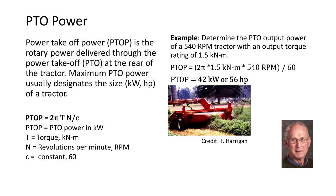Power takeoff power is the rotary power delivered through the power takeoff at the tractor's rear. Tractor size in kilowatts or horsepower is usually designated as the maximum power available at the PTO. Because PTO power is rotational, we can calculate the PTO output power for a tractor with a rotational speed of 540 RPMs and an output torque of 1.5 kN meters as the product of 2π times 1.5 kN meters times 540 RPMs divided by 60. The PTO power is 42 kW or 56 horsepower.